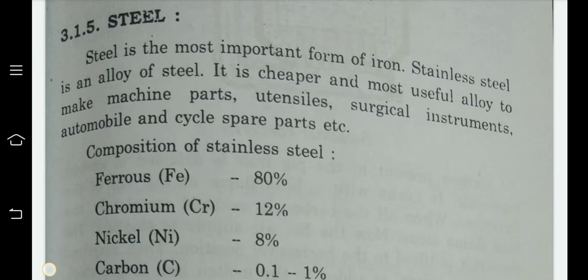Now, the manufacture of steel from pig iron using the Bessemer converter. In this process, pig iron is converted into steel. It is carried out in a Bessemer converter, which is a large pear-shaped furnace made of iron, lined inside with silica bricks.